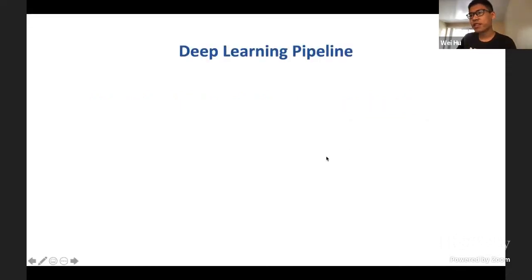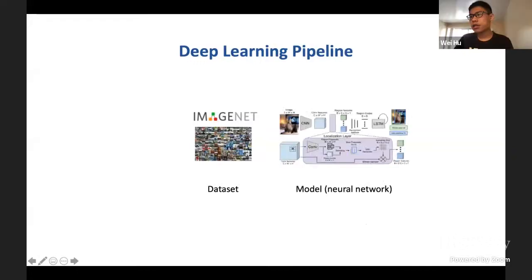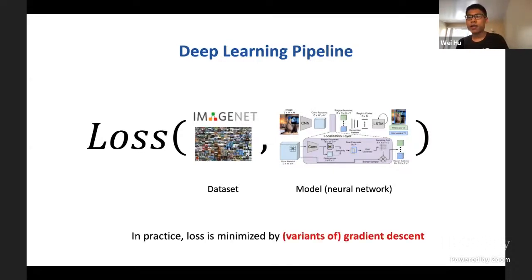Let me just start by briefly reviewing the pipeline of deep learning. Usually we first need to have a dataset, for example, ImageNet is one of the most popular. Then we need to design a model, and in the context of deep learning, the model is usually in the form of a deep neural network. There are usually many, many parameters in the model, and we want to find a configuration of these parameters such that the model can perform well on the data population. The way to find such parameters is to try to minimize some loss function, some training loss function, which basically measures how well the model performs on the training dataset. And in practice, the loss is usually minimized by the gradient descent algorithm or some variance of the gradient descent algorithm.